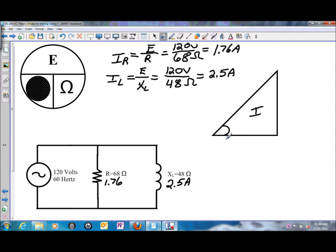The adjacent side of the triangle is going to be the resistive side, or in this case, the resistive current of 1.76 amps. The opposite side is the reactive side, and that is 2.5 amps of reactive current. So to find I total, use the Pythagorean theorem.